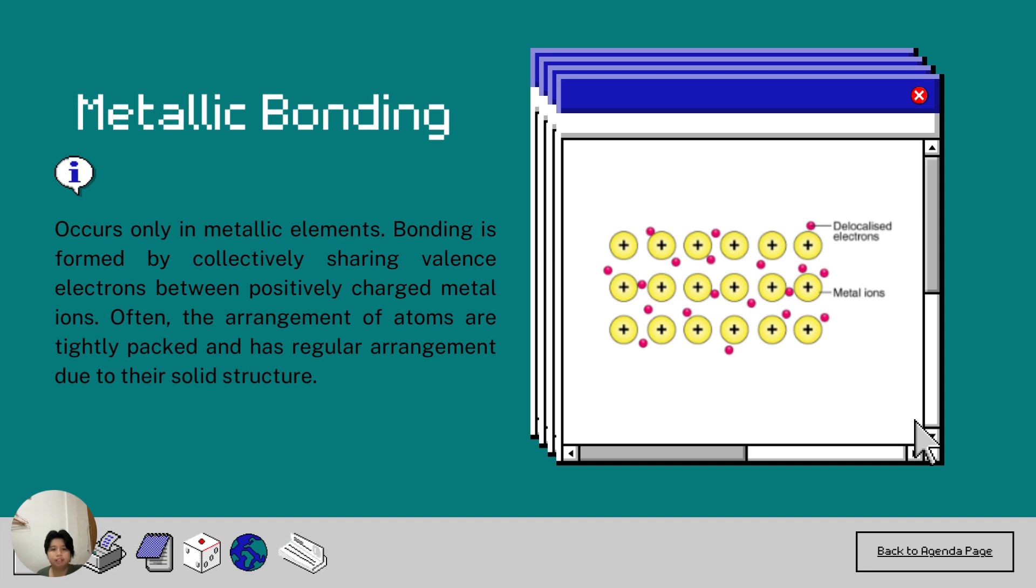What is metallic bonding? It is only present in metallic elements. Positively charged metal ions share their valence electrons in order to form bonds. Due to their solid structure, atoms are frequently closely packed and arranged in regular patterns.